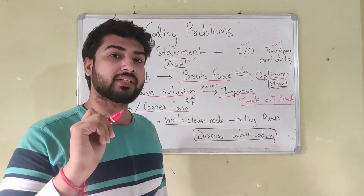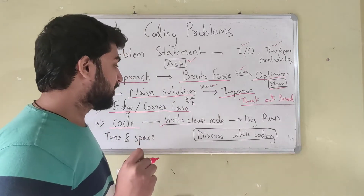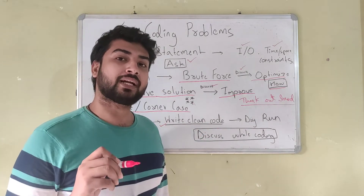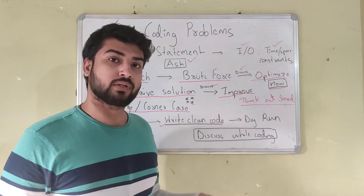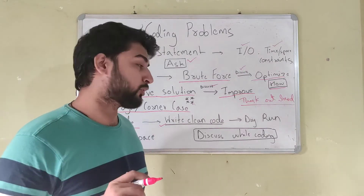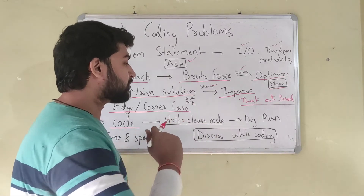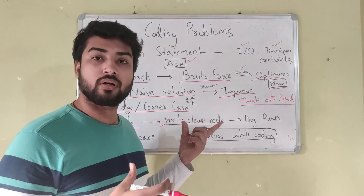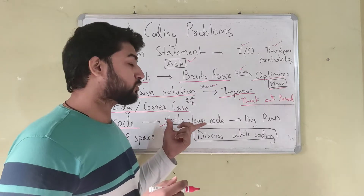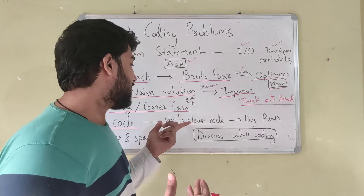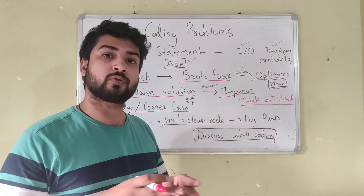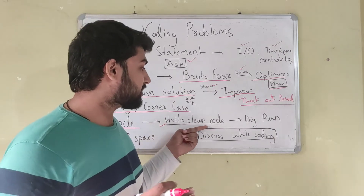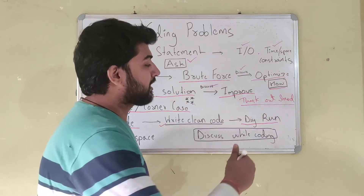Once you have an approach and have thought of corner cases, you can start writing the code. It's very important that you write clean code. A mistake a lot of people make is writing code that is not readable. Use good, understandable variable names, use proper function names, use different functions for different things, and make sure you have correct indentation so your code is readable.